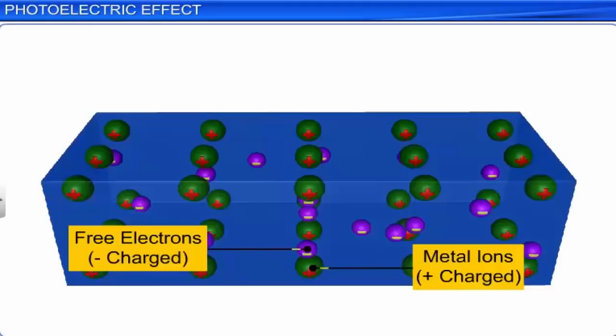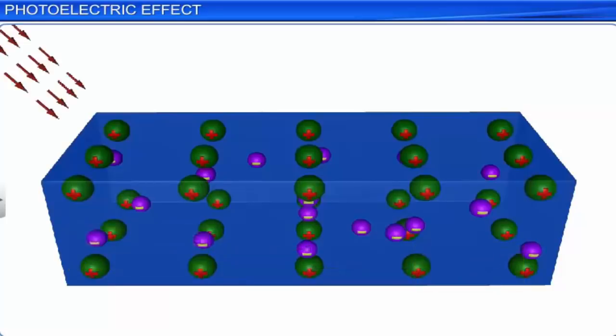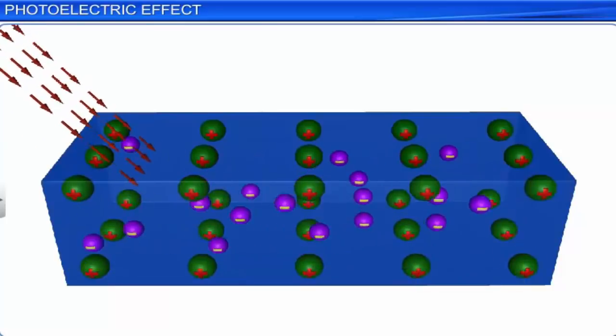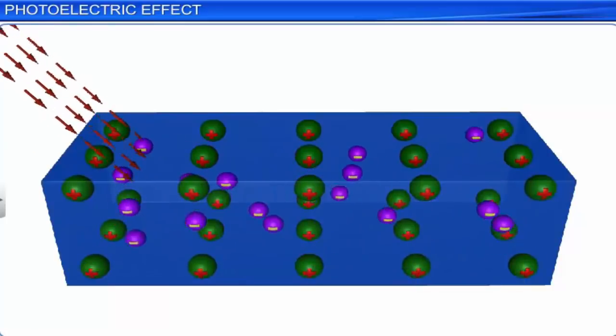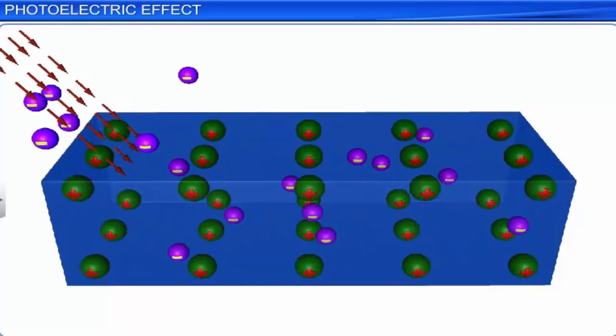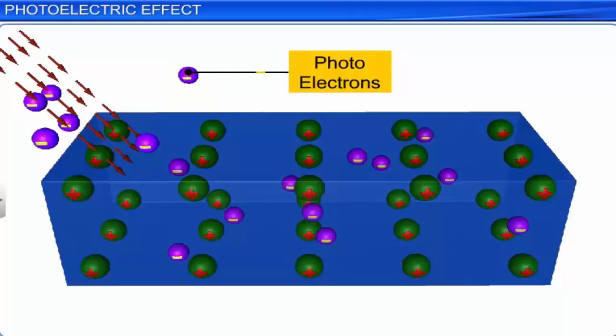The photoelectric effect is a phenomenon of the emission of electrons by a metal surface after absorbing light energy. The electrons thus emitted are called photoelectrons.